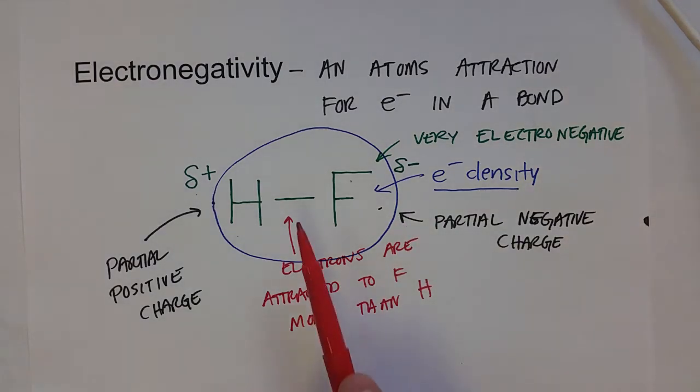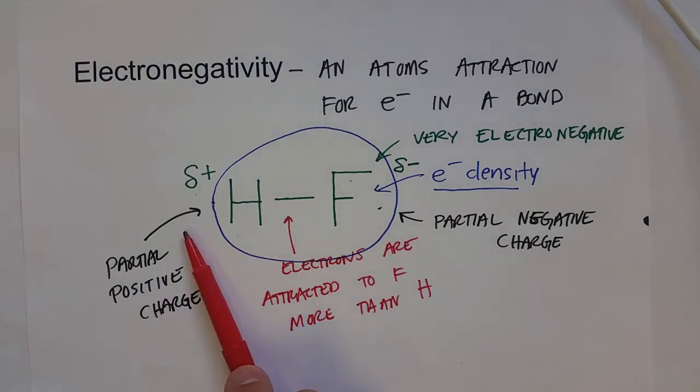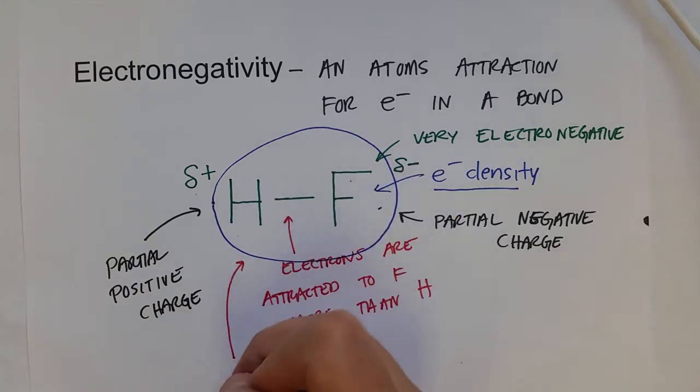Since this bond has two different ends, this is called a polar covalent bond.